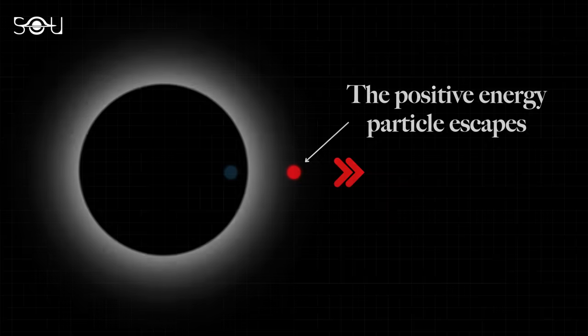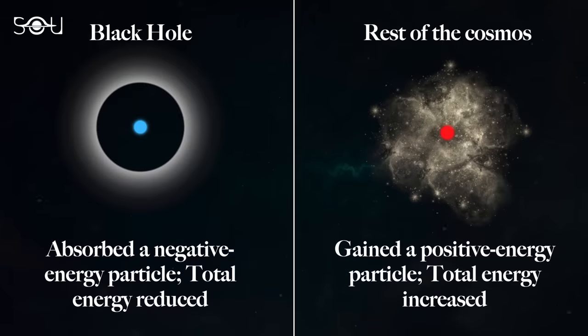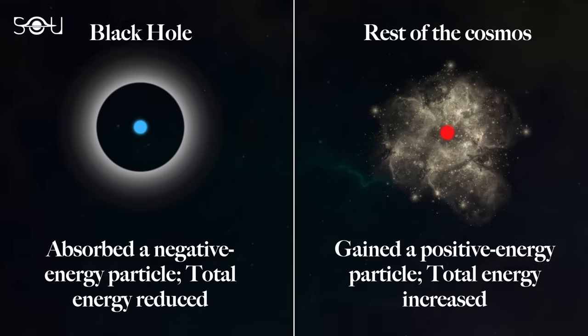In contrast, the positive energy particle is freed and escapes into infinity. As a result, the black hole loses energy to the vacuum fluctuation due to the negative energy particle, whereas the energy of the rest of the universe increases because of the positive energy particle.